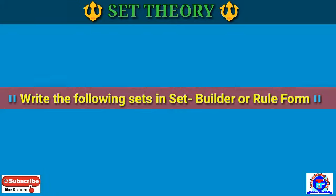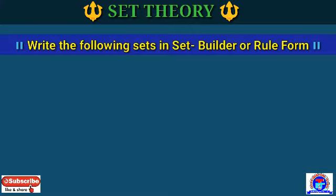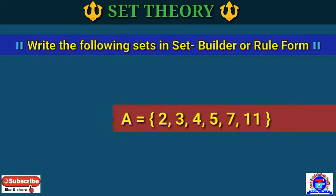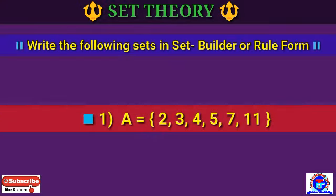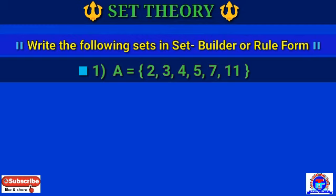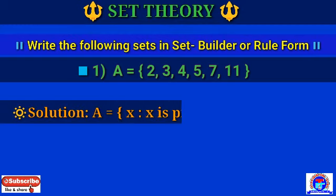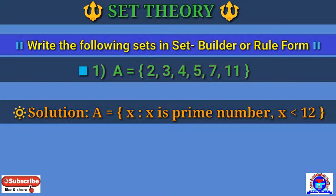Now we write the following sets in set builder form. Number 1: A = {2, 3, 5, 7, 11}. Solution: A = {x | x is a prime number, x < 12}. That is the representation in set builder or rule form.